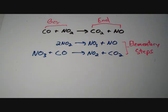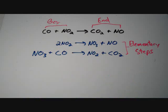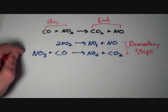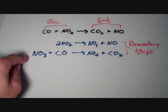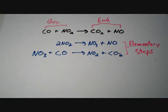One of the requirements of a reaction mechanism is that the sum of the elementary steps must be equivalent to the overall chemical equation. In other words, if we add these two individual equations together, we should get the overall chemical equation back. Let's check whether the elementary steps do indeed sum to the overall chemical equation.